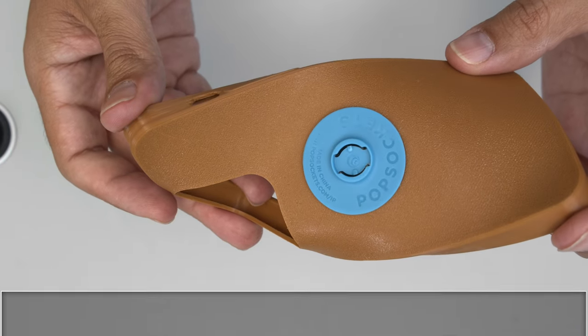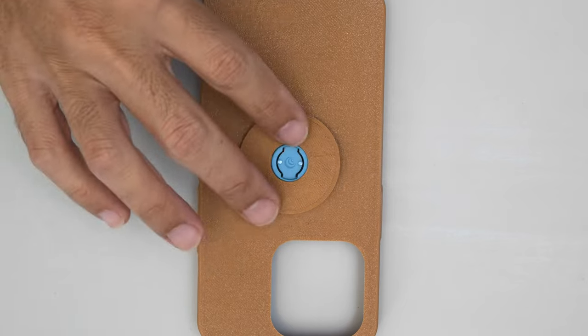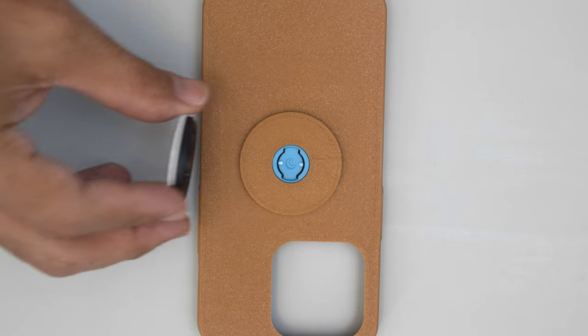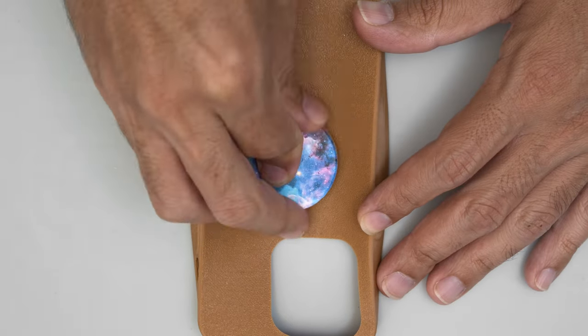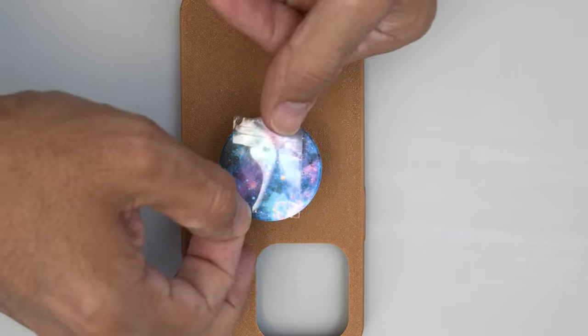An additional cover goes over the base of the pop socket to make it match the rest of the phone. Then the handle can be press fitted on top. Now we can add a piece of double-sided tape to attach the ear.